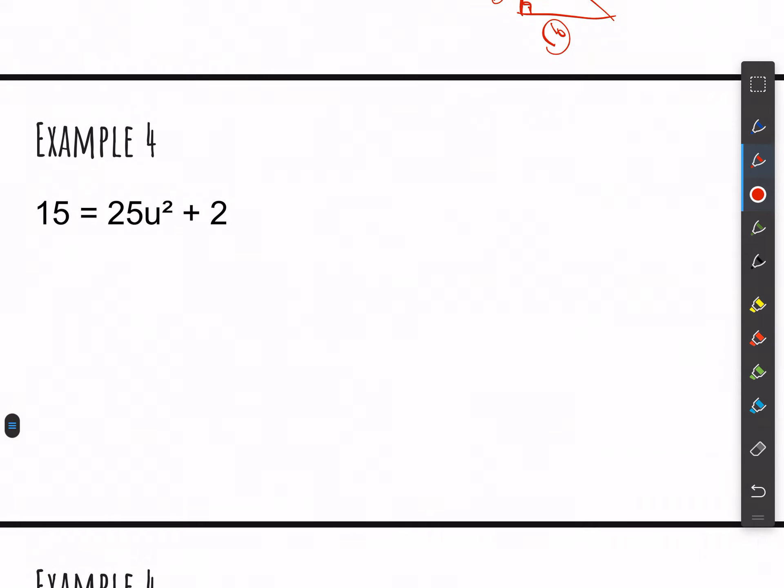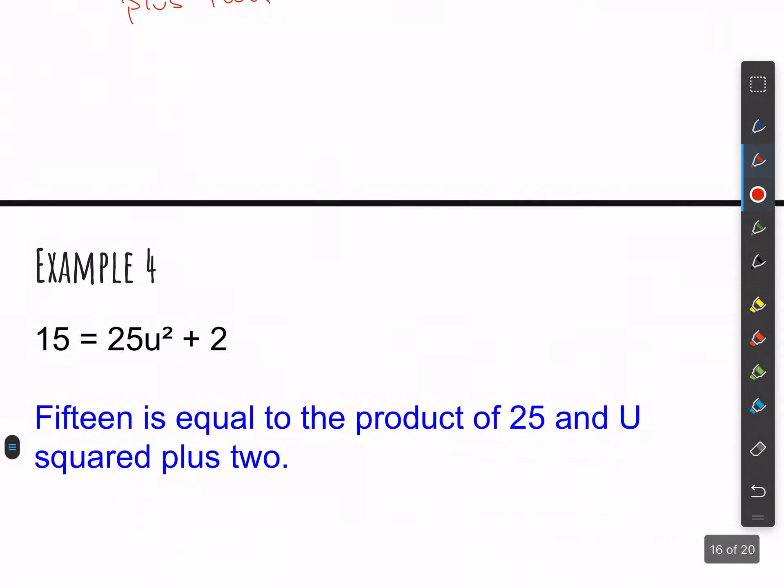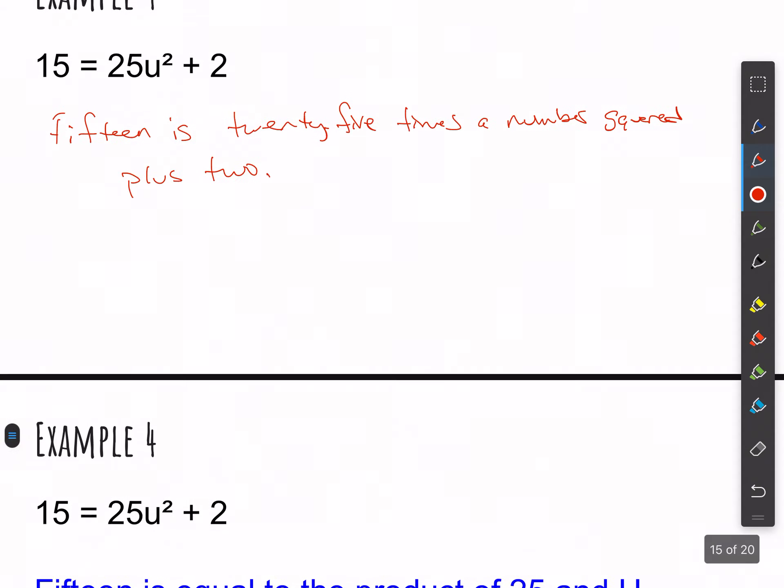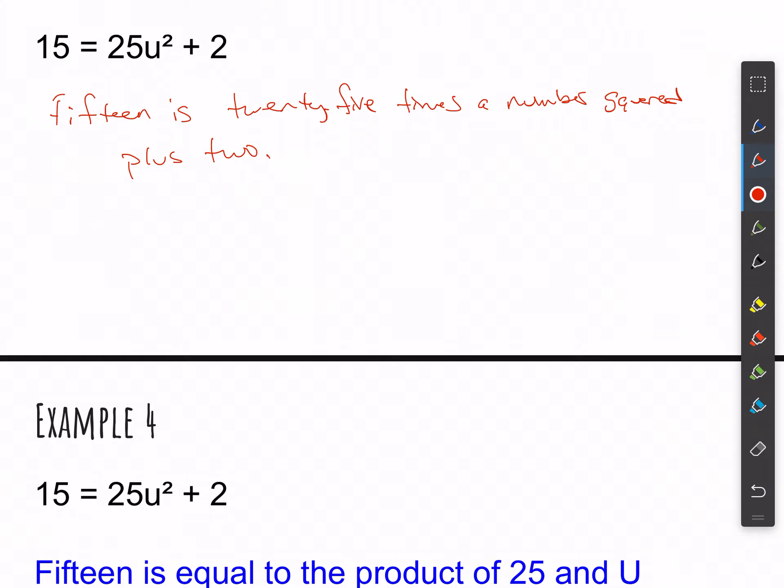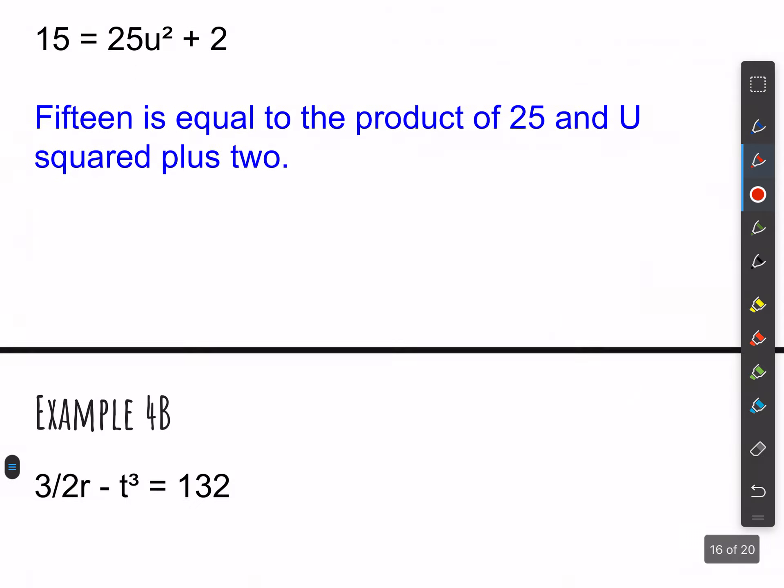Example four, they want you to write a verbal now for the algebraic. So here I would say 15 is 25 times a number squared plus 2. I could have done that a number of different ways. I might have even done a different one here. 15 is equal to the product of 25 and U squared plus 2. That works as well. There's a number of different possibilities that you could do for this, but just make sure that if you read it back and somebody else reads it back and then creates their equation from your writing, like maybe try it out on a parent or a friend, say, hey, write this thing out and see if they write out this. And if they do, chances are you did a good job.